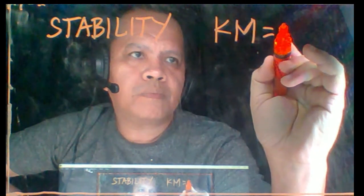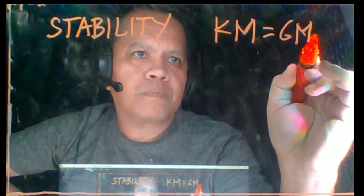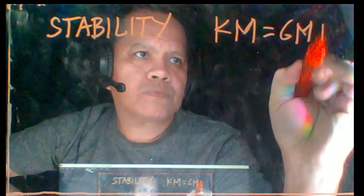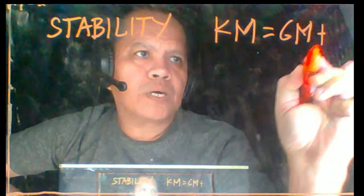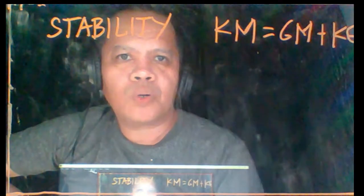If you have GM plus KG, you get the formula for the total KM.